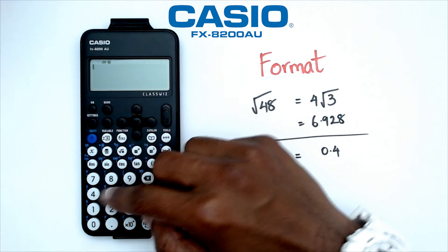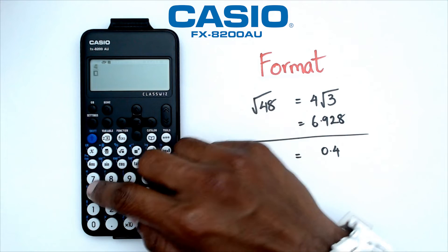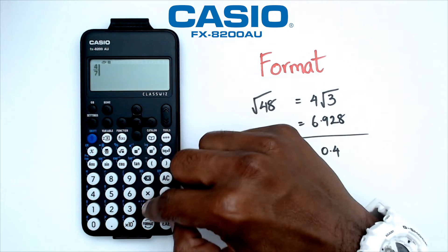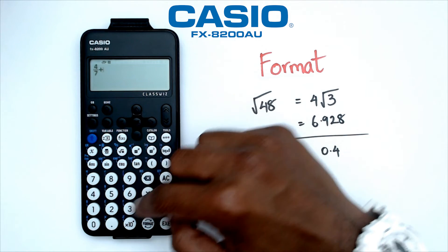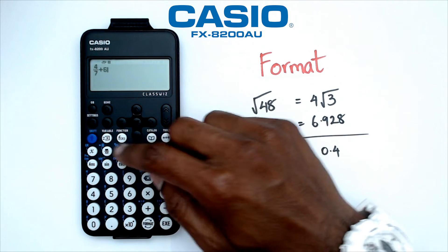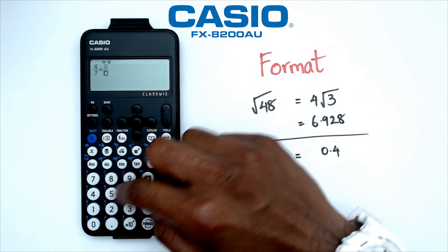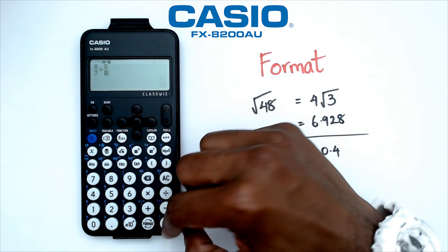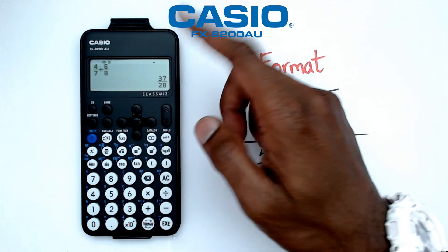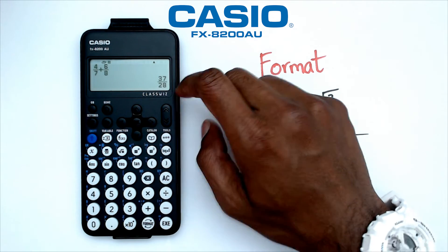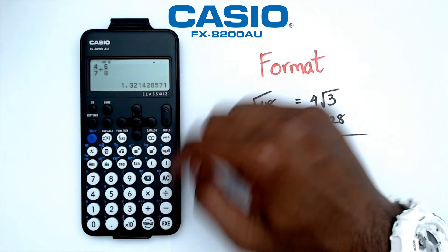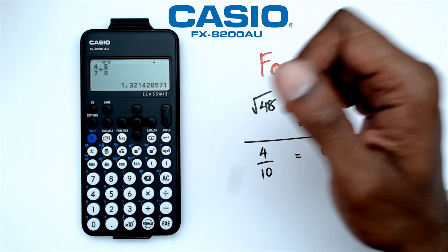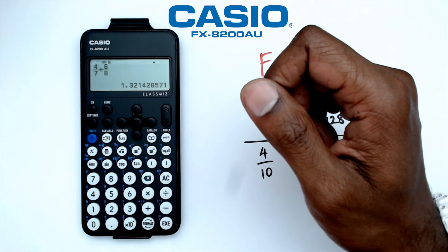Let me show you why — let's go back to Home, then Calculate, and I'm going to do four over seven plus six over eight. That gives me 37 over 28, and of course if I go Shift+Equals, that's going to give it to me as a decimal.